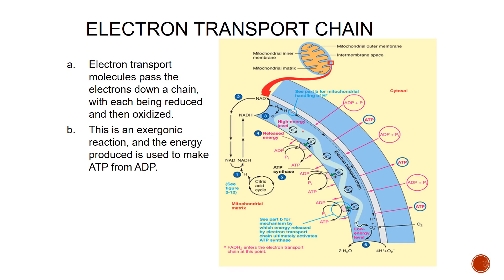Looking at the electron transport chain, the electron transport molecules pass electrons down the chain. Hydrogen is donated from the citric acid cycle to make NADH. NADH then starts the process of hydrogen and electrons jumping down the chain, releasing energy so that ADP can make ATP. There are several rounds of this, due to the large surface area of the cristae on the mitochondria.